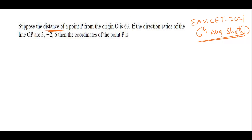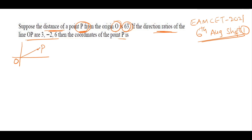Next problem: the distance of point P from the origin is 63. The direction ratios of line OP are (3, −2, 6). Find the coordinates of point P. The line OP passes through the origin (0, 0, 0) with direction ratios (3, −2, 6).